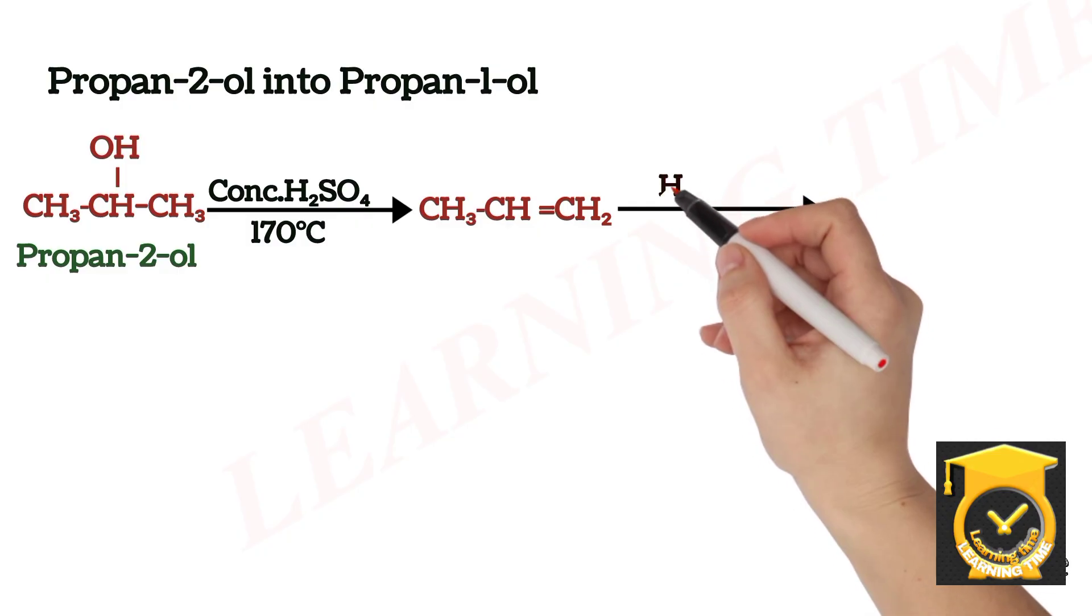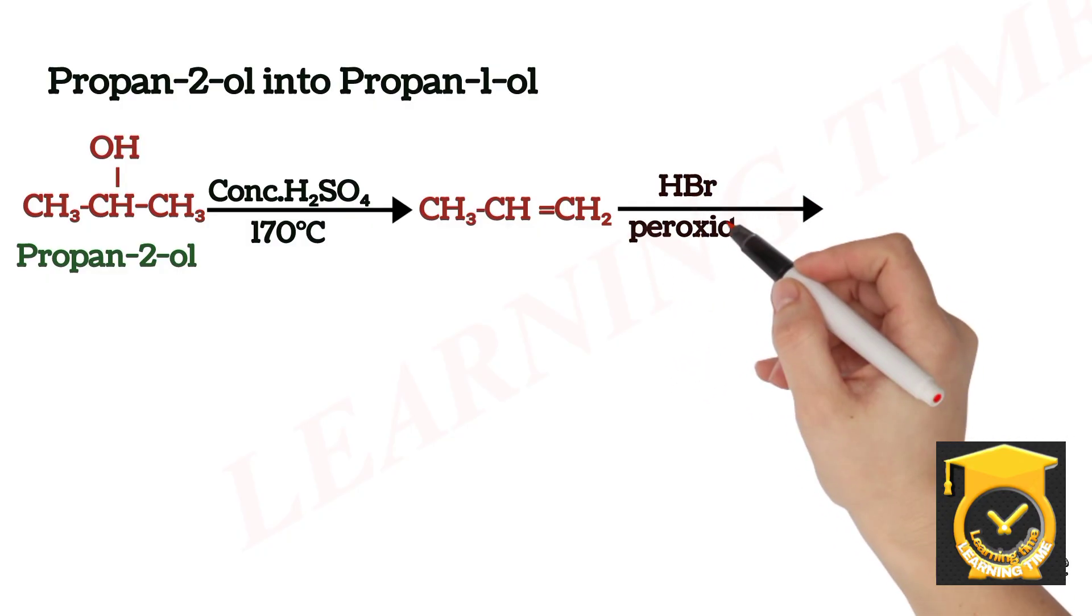Propene reacts with HBr in the presence of peroxide (anti-Markovnikov effect) to give 1-bromopropane.